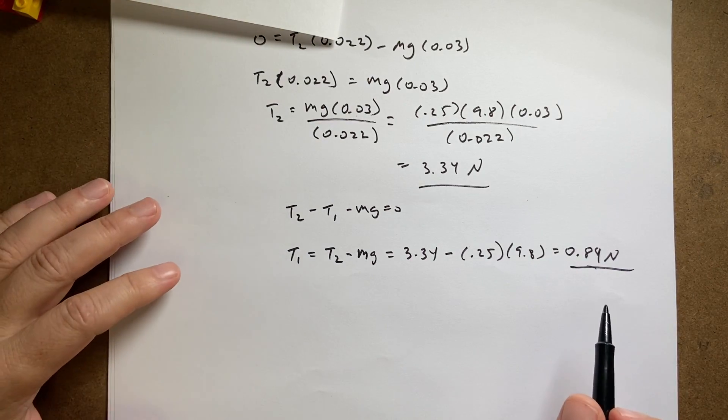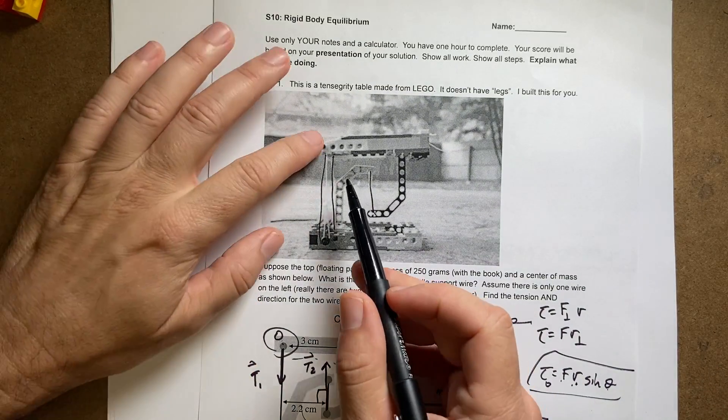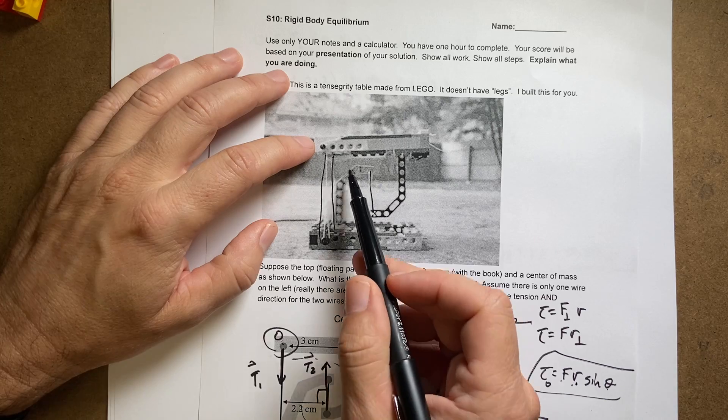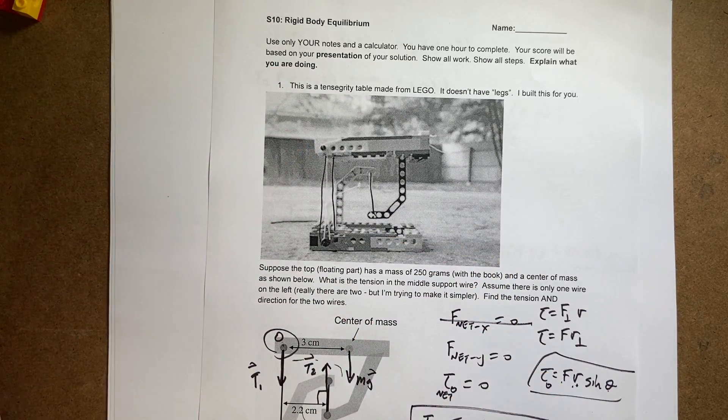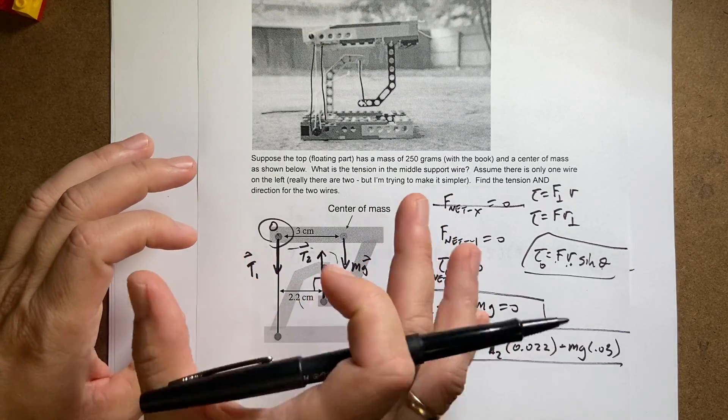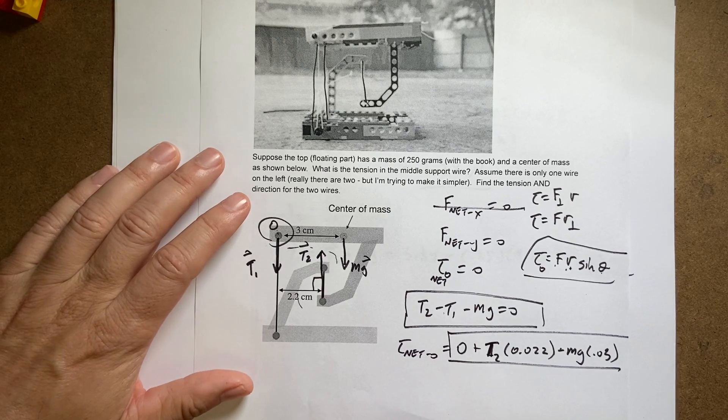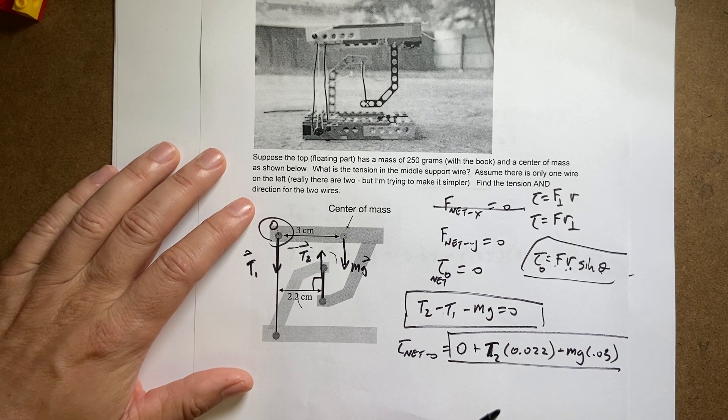And now I have the two tensions for the table. And that's actually split between these two wires in real life. But it's technically possible to make it this way with only two cables. It just wouldn't be as stable. So there you go. The end. See you soon.